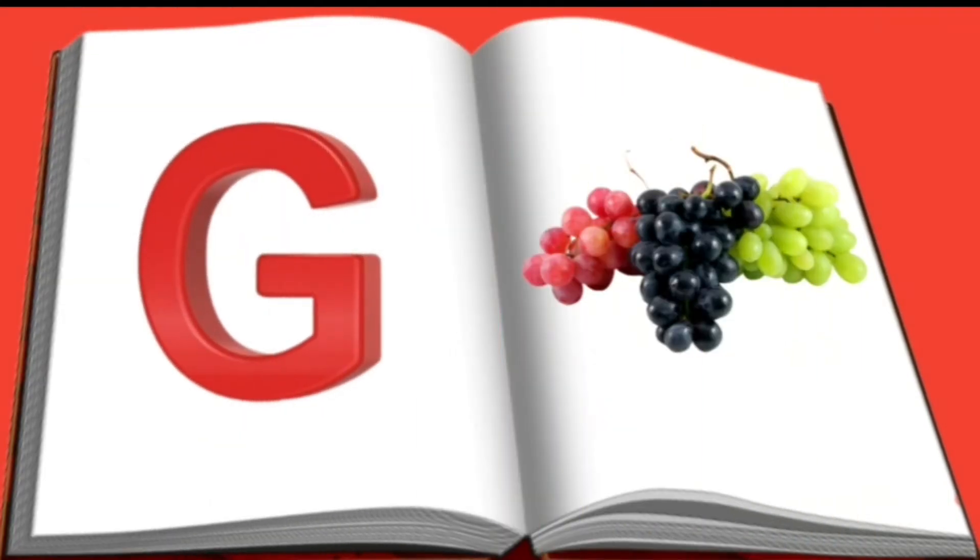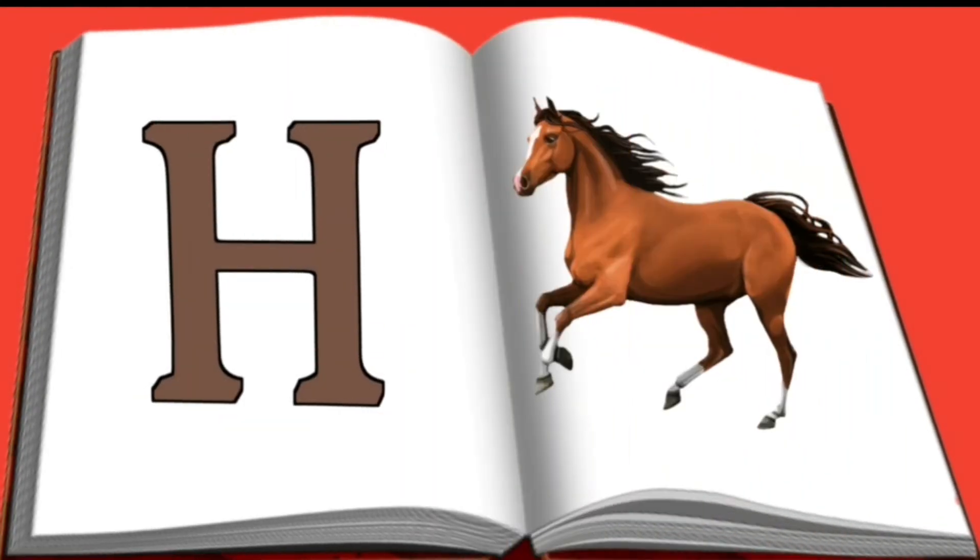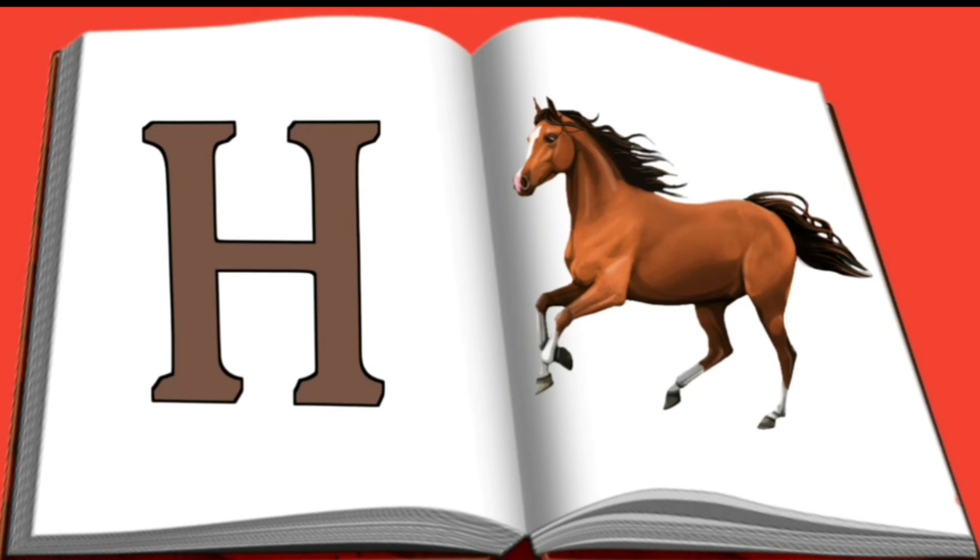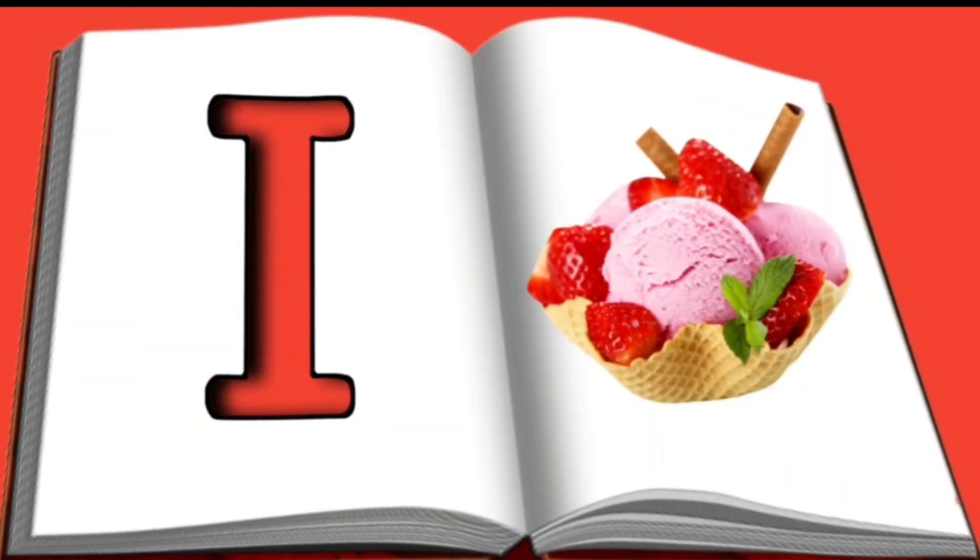G. G for crab. H. H for horse. I. I for ice cream.